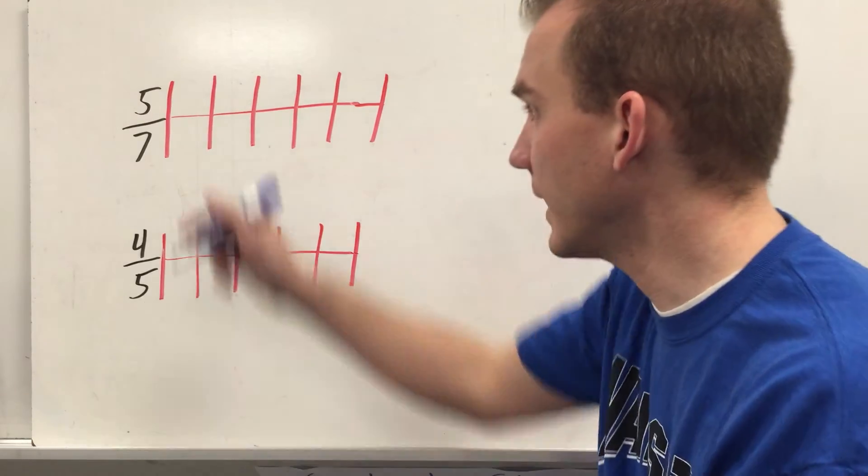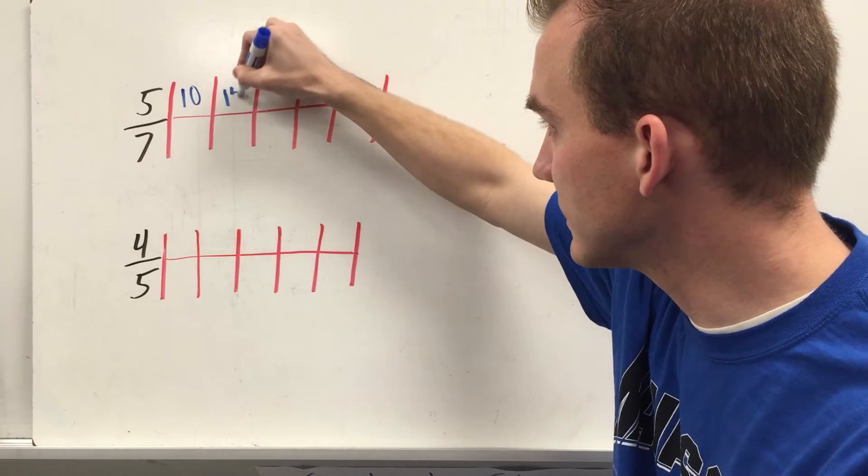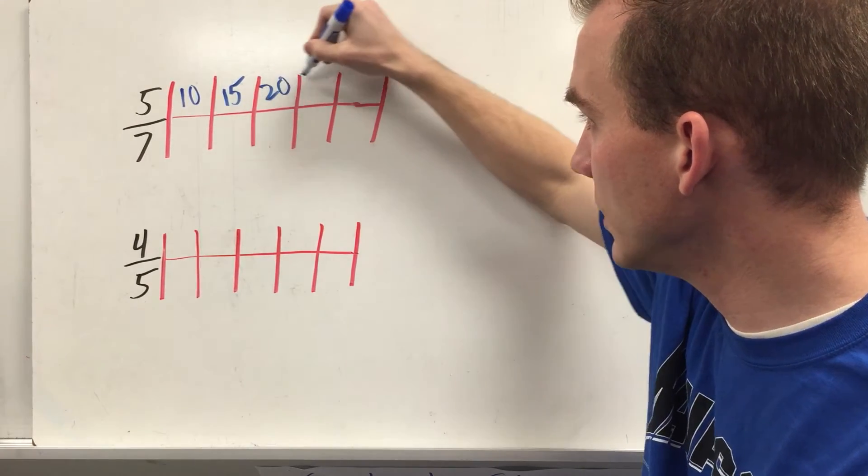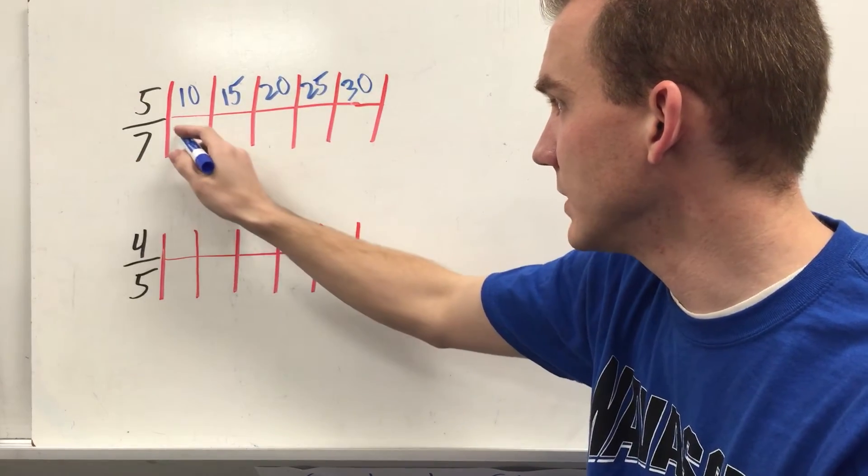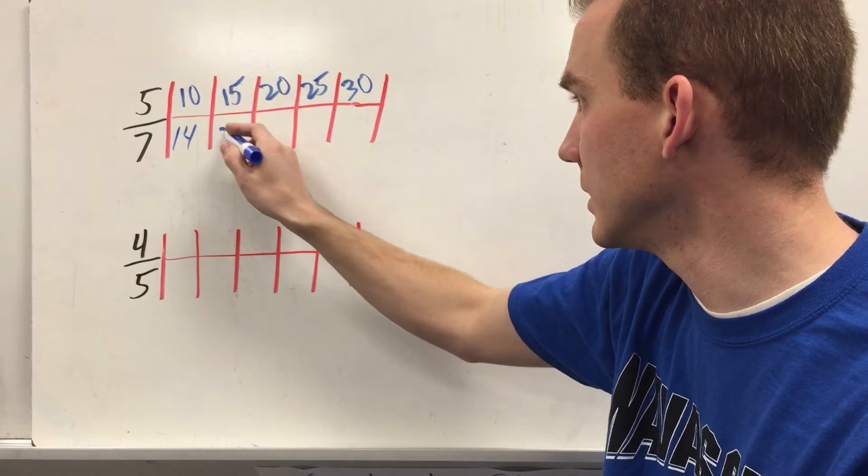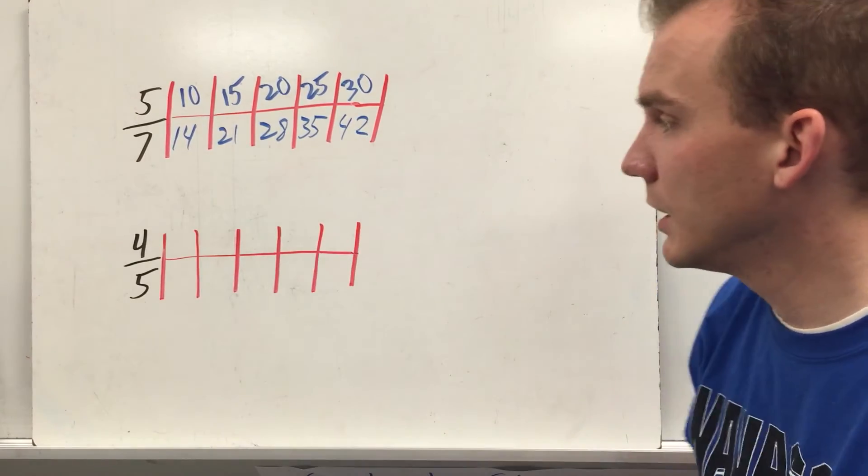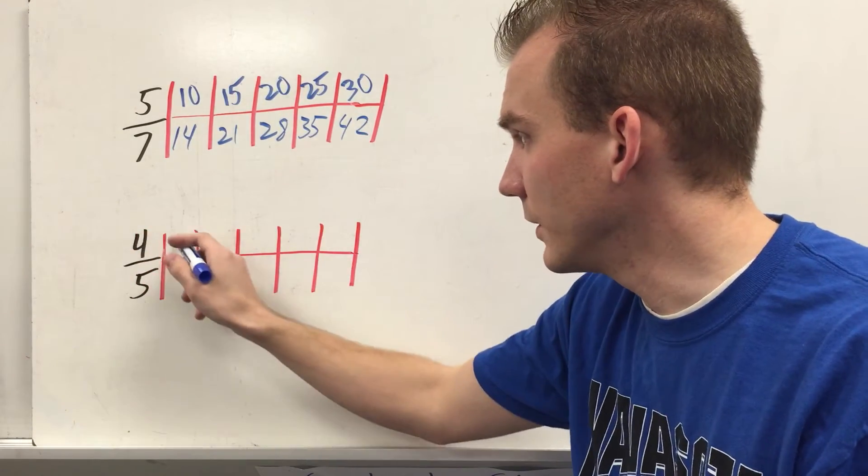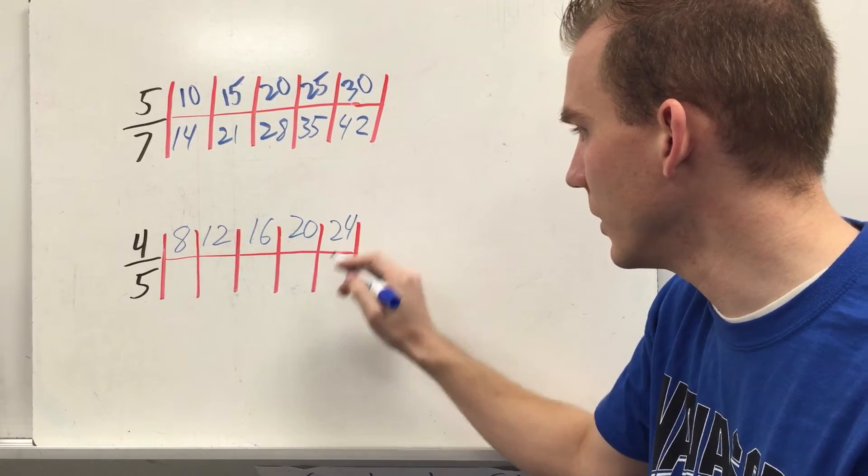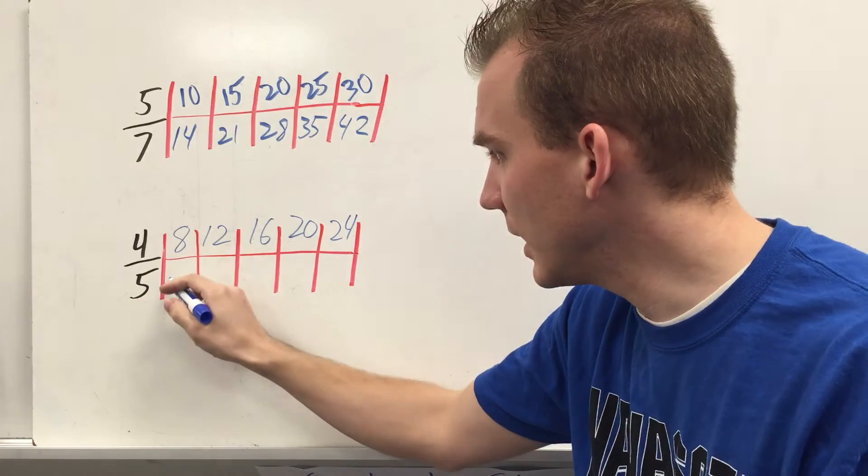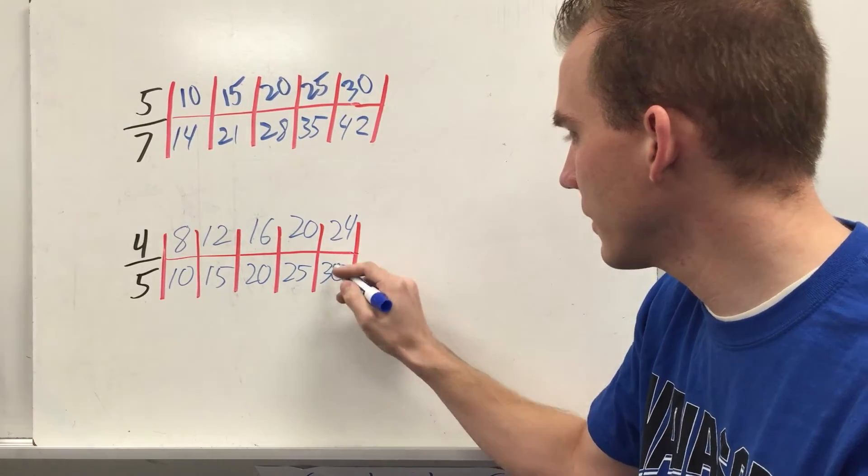This is a great practice for multiplication facts because it's just like 5. 5 times 1 is 5. 5 times 2 is 10. 5 times 3 is 15. 5 times 4 is 20. 25 is 5 times 5. 30 is 5 times 6. 7 times 1 is 7. Times 2 is 14. 21, 28, 35, 42. 4 times 1 is 4. Then you have 8, 12, 16, 20, 24. 5 times 1 is 5. Then you have 10, 15, 20, 25, 30.